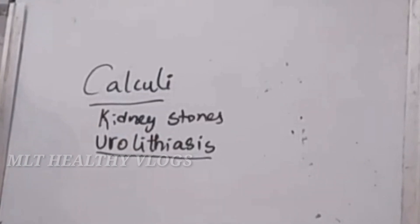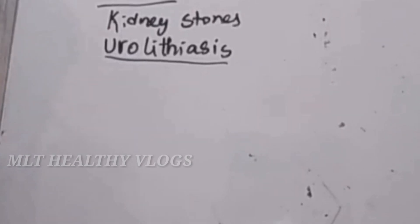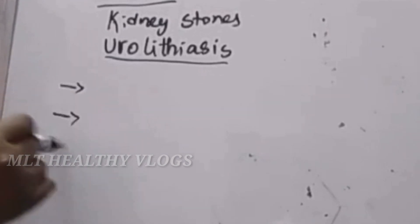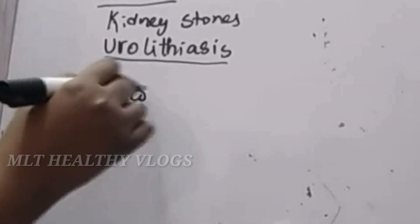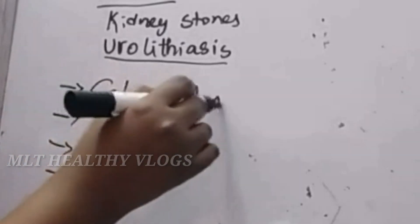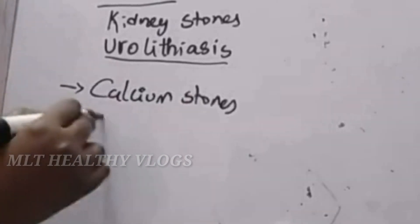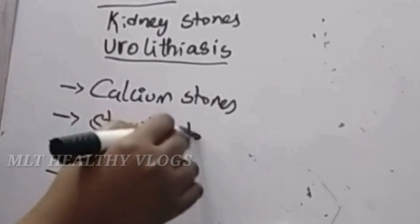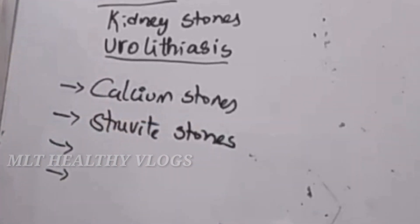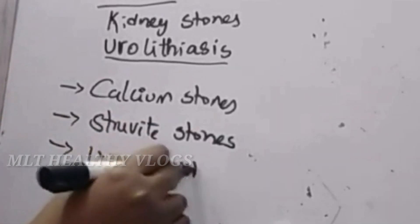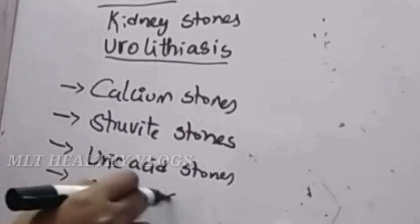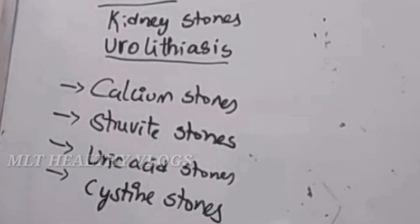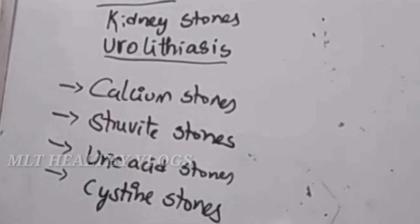In the urinary tract, there are all types of kidney stones. There are 4 main groups: Number 1 - calcium stones, Number 2 - struvite stones, Number 3 - uric acid stones, Number 4 - cystine stones. So there are 4 types of stones. Let's discuss them one by one.